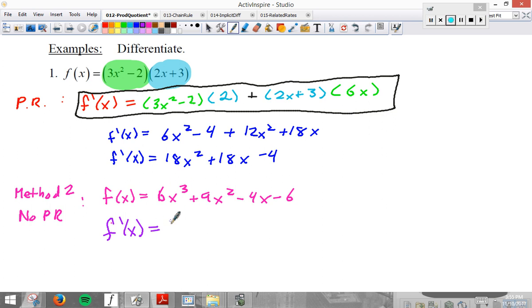And then we would get f prime just using the basic rules now. 3 times 6, 18. 3 minus 1 is 2. 2 times 9, also 18. 2 minus 1 is 1, you don't like the 1. Derivative of 4x is 4, negative, because the slope of negative 4x is negative 4. And we see these match. Now if you're really strong with foiling this is probably just as fast as this, but the point is in many examples this will be faster. The product rule will be the only game in town.